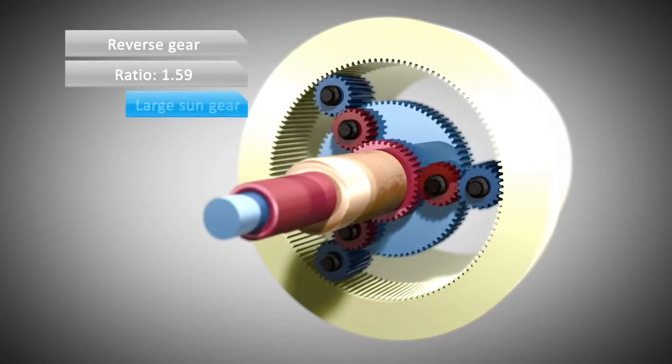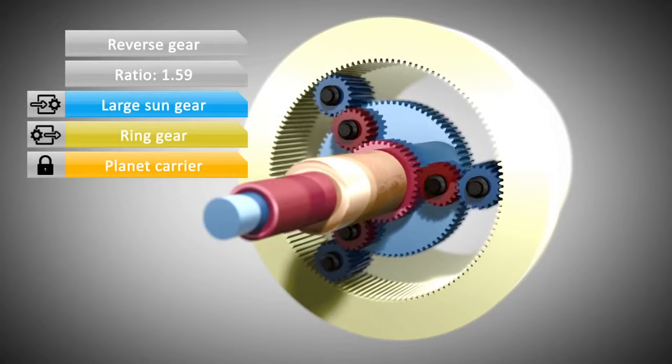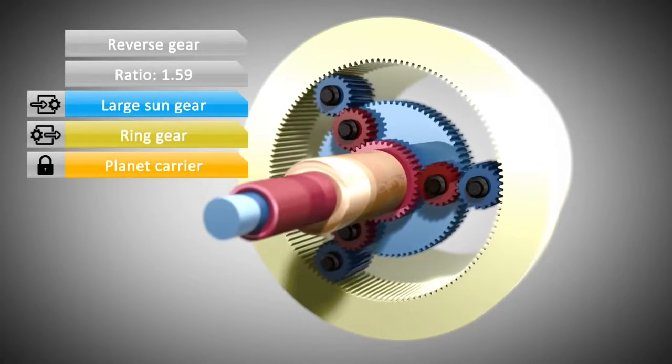In reverse gear, the large sun serves as the input. As in 1st gear, the planet carrier is held stationary by a braking unit. The ring gear is the output.